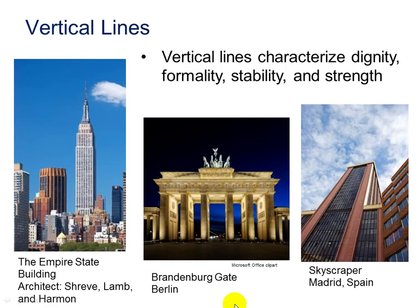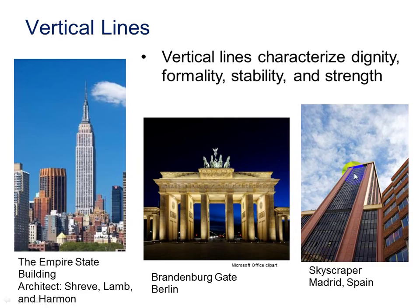So let's see how these are used in design. Vertical lines characterize dignity, formality, and strength. The Empire State Building was constructed using vertical lines to reach high to the sky to show stability and strength. Here at the Brandenburg Gate in Berlin, we also see vertical lines at the base of the gate to represent stability and strength.